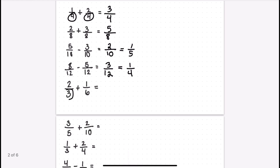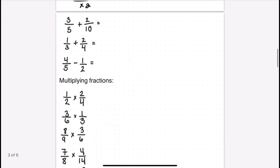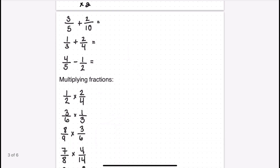In the next example I don't have the same denominator, but three goes into six easily — three times two is six — so I can convert the first fraction by multiplying the top and bottom by two. Then I can add straight across, leaving my answer as five sixths, which is already in the most reduced form.